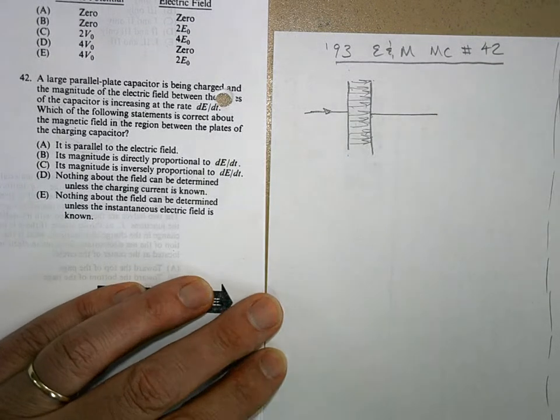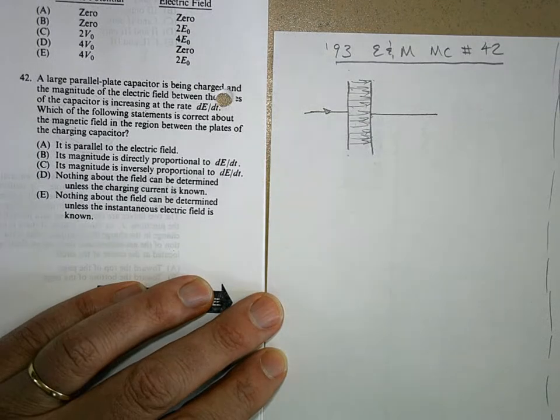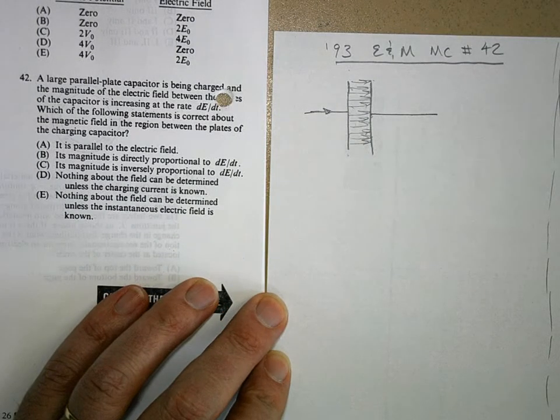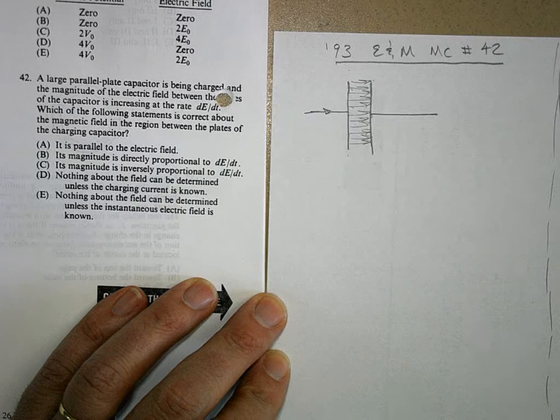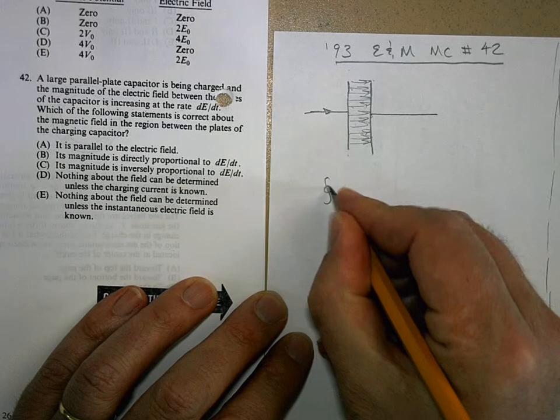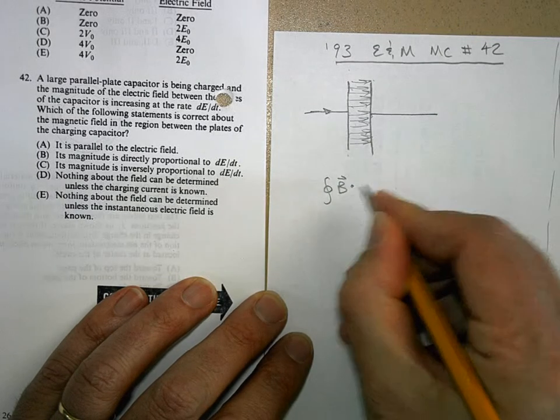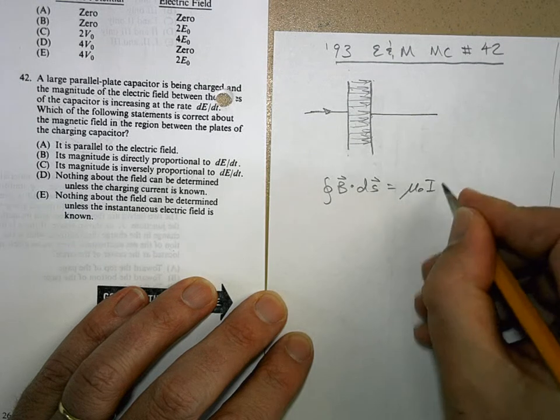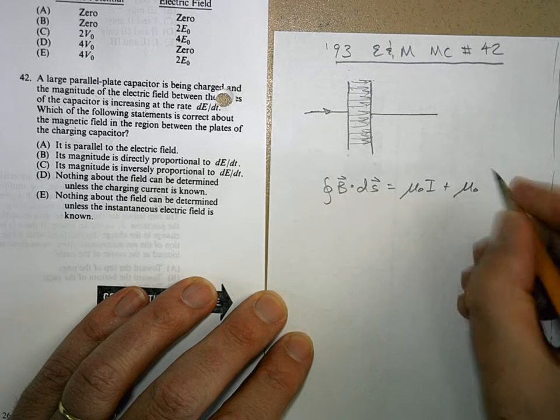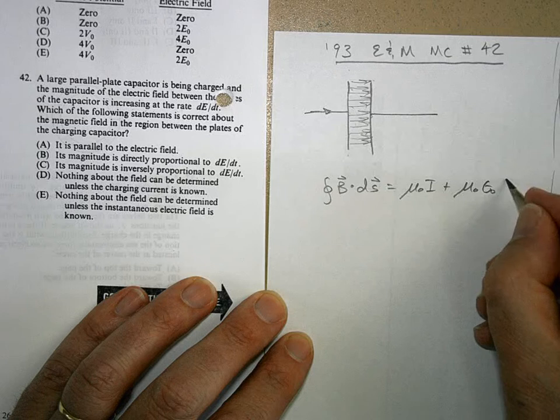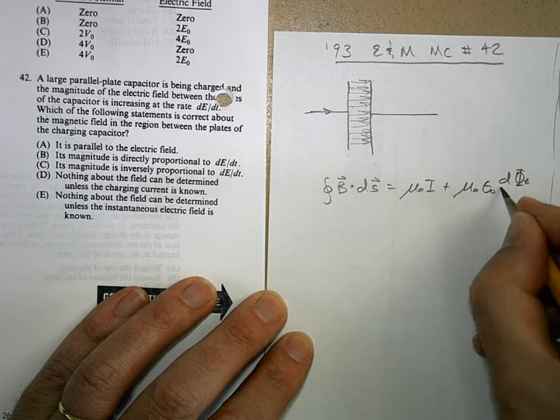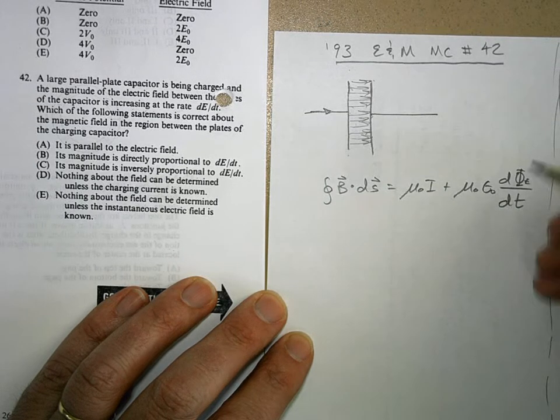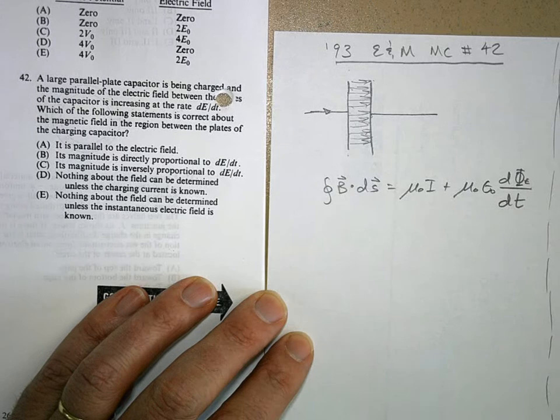And so we want to use Ampere-Maxwell's law, which says: the integral of B dot dS equals mu naught i plus mu naught times epsilon naught times d(phi)/dt, where phi is the electric flux.